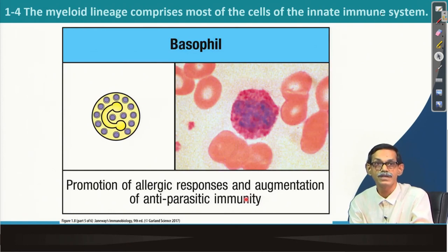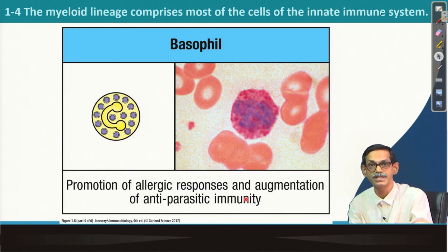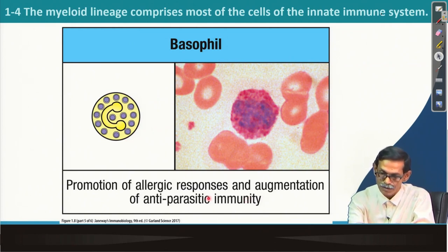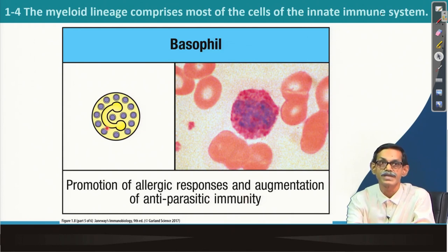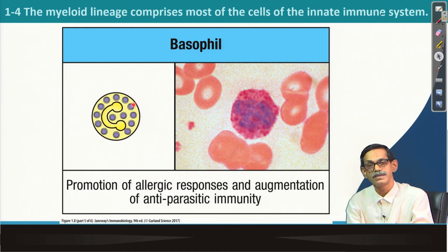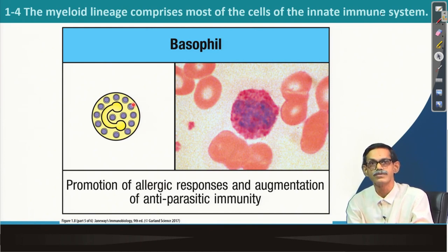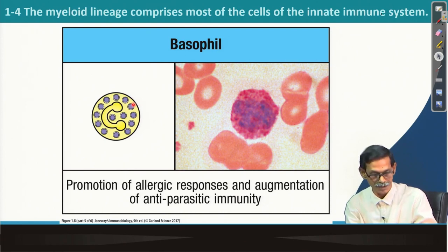Basophils promote allergic responses and augment antiparasitic immunity. You can see there are a lot of vesicles filled inside basophils, and these vesicles contain different chemicals which are used to show this immunity.